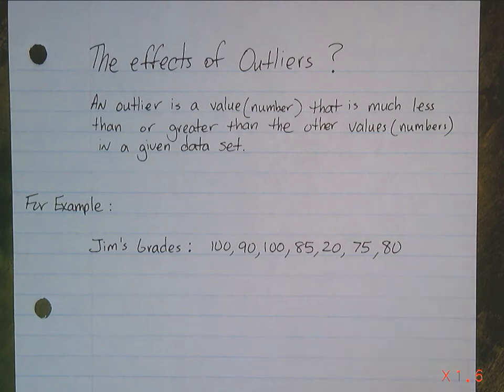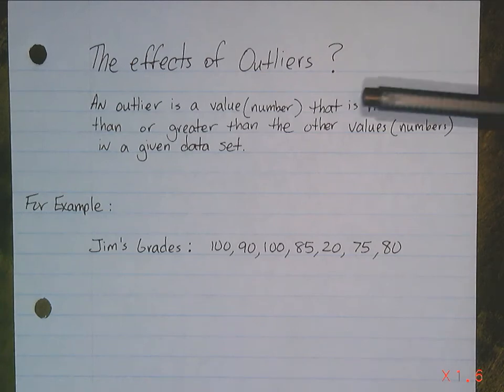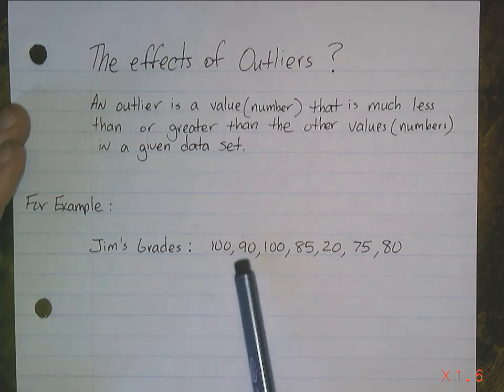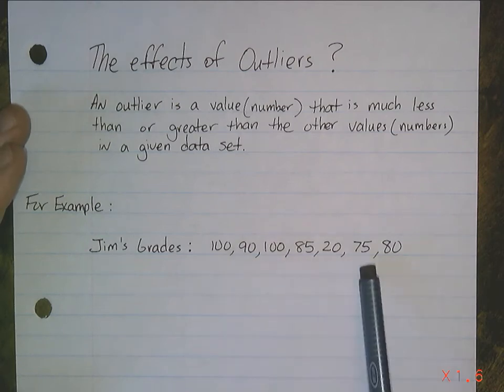But what is an outlier? An outlier is a value or number that is much less or greater than the other values in that data set. So for example, let's say Jim's grades are 100, 90, 100, 85, 20, 75, 80.